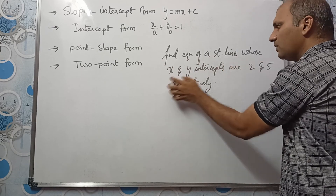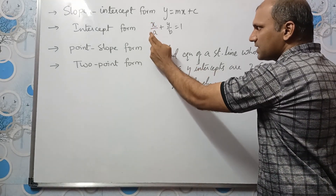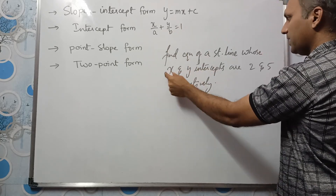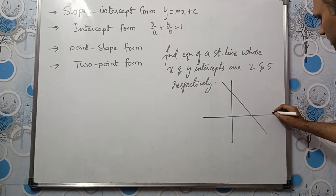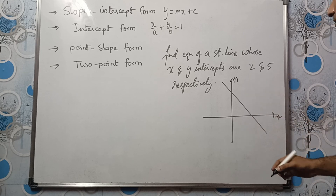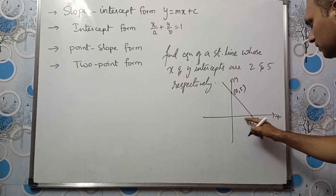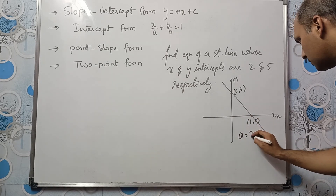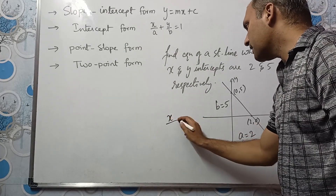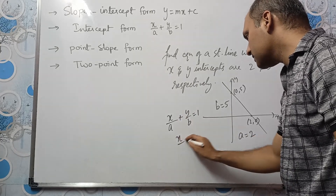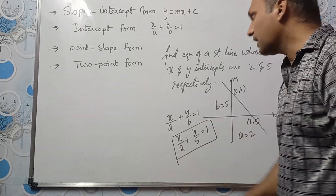New problem: Find the equation of a straight line whose x-intercept and y-intercept are 2 and 5 respectively. We use intercept form: x/a + y/b = 1. Here a = 2 and b = 5. So the equation is x/2 + y/5 = 1. This is the equation of the straight line in intercept form.